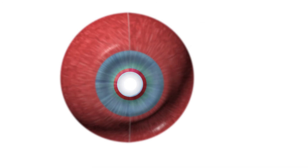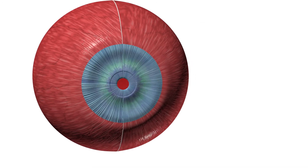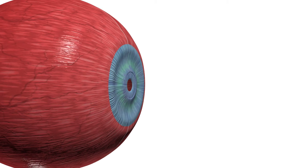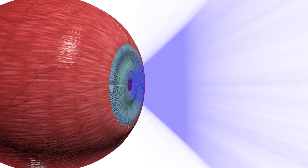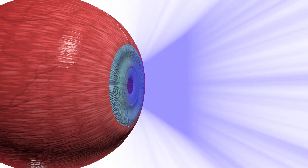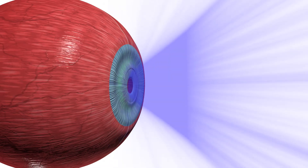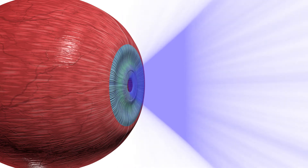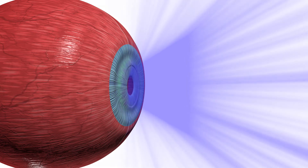Pupil: the circular opening in the centre of the iris that adjusts the amount of light entering the eye. Its size is determined by the parasympathetic and sympathetic innervation of the iris.